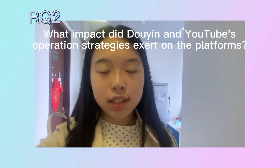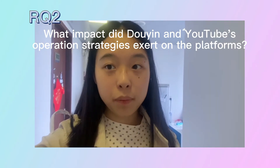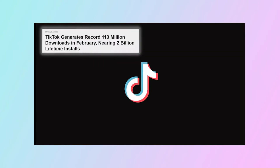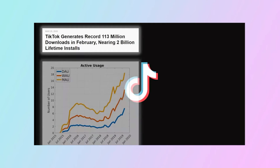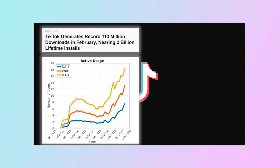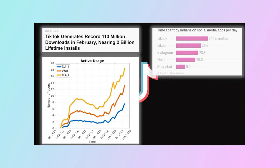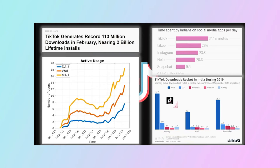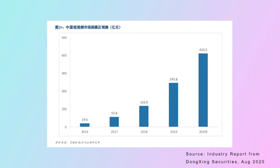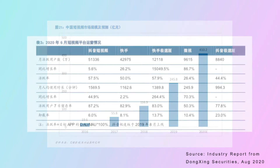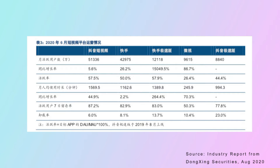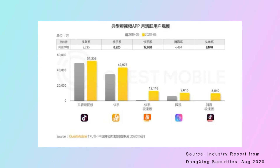My second research question is: what impact did Douyin and YouTube's developing strategies exert on the platforms? In recent years, excellent operation strategy in content management and algorithm has led to a huge user base and monetization potential for both platforms, especially YouTube. Douyin grew from a small video sharing community to a super platform with more than 600 million DAU in just five years. Market estimation of Douyin's revenue in 2021 is RMB 150 billion, more than twice the revenue of Kuaishou in 2020.